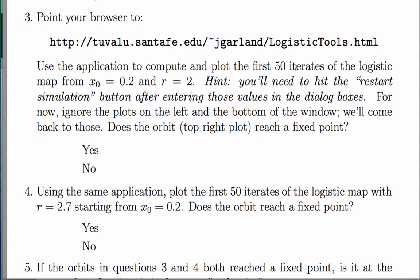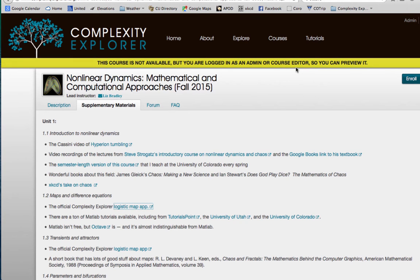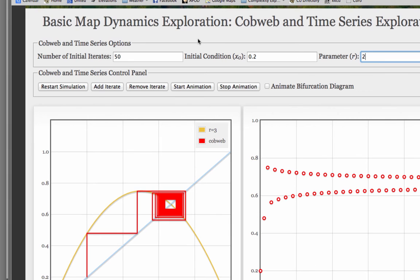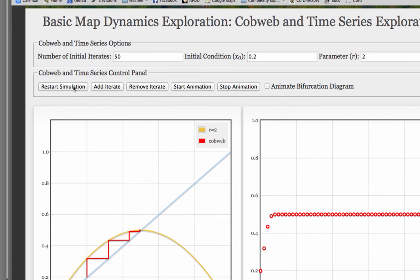For the third problem, you'll need to go to the app that we've written for you to use to explore the logistic map. You can find that app under the supplementary materials section of the Complexity Explorer homepage for this course. Scroll down to the current unit, which is unit 1, and the current segment, which is segment 1.2, and there's the app. The task was to plot 50 iterates of the logistic map with r equals 2 from an initial condition x0 equals 0.2.